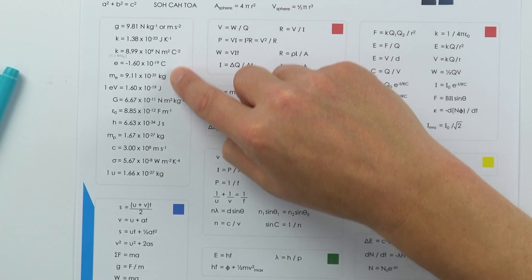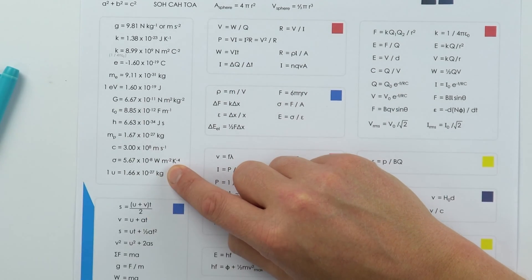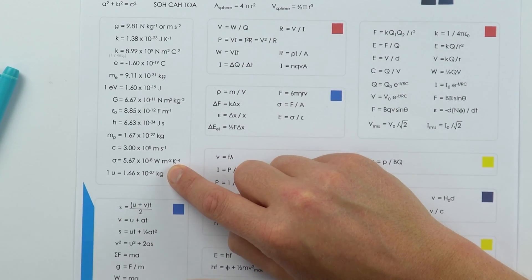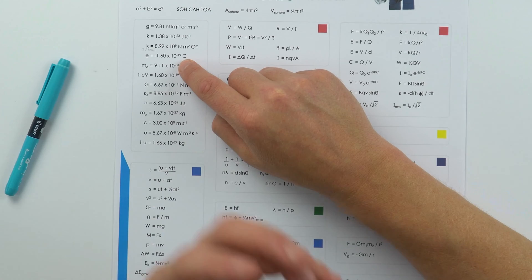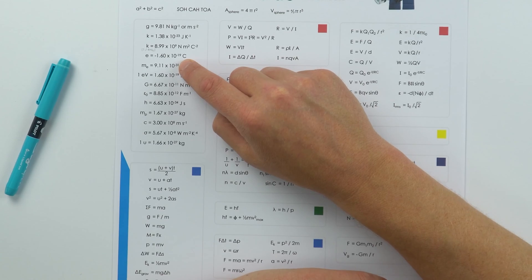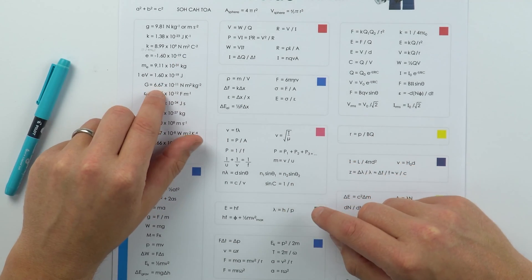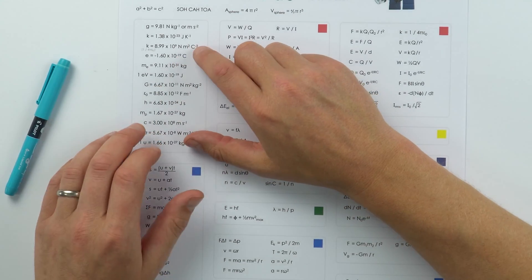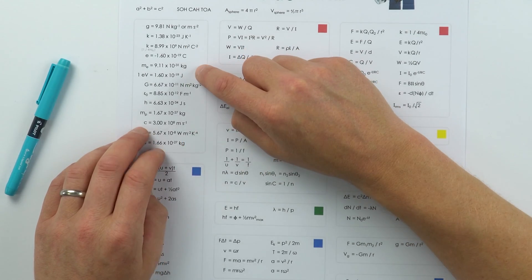I also have a lot of the constants down here that you're going to be referring to, and the more questions you do, the more familiar with them you're going to become. You will just remember things like the charge, the elementary charge on an electron. You'll remember things like the gravitational constant, but this is for you to double-check the numbers when it comes to doing equations and calculations.